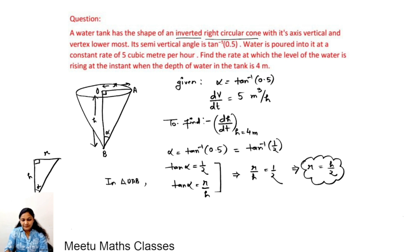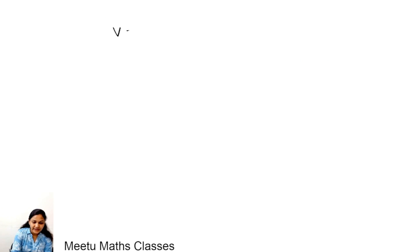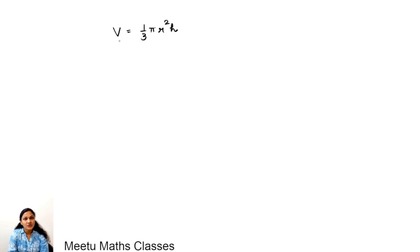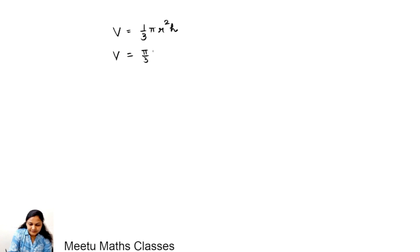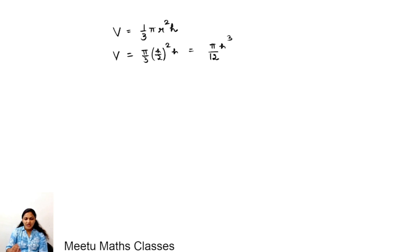The volume of water in the cone is V = (1/3)πr²h. We replace r with h/2, giving V = (1/3)π(h/2)²·h = (1/3)π·(h²/4)·h = πh³/12.